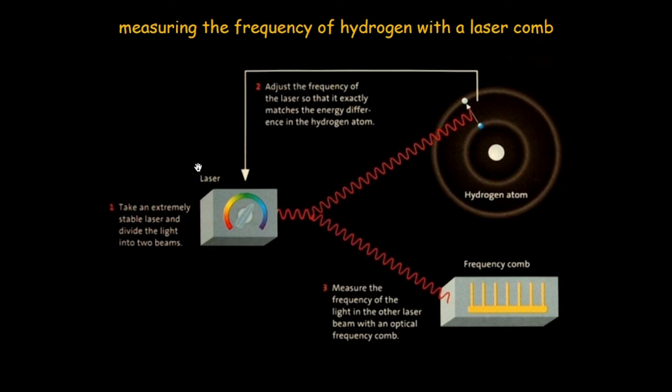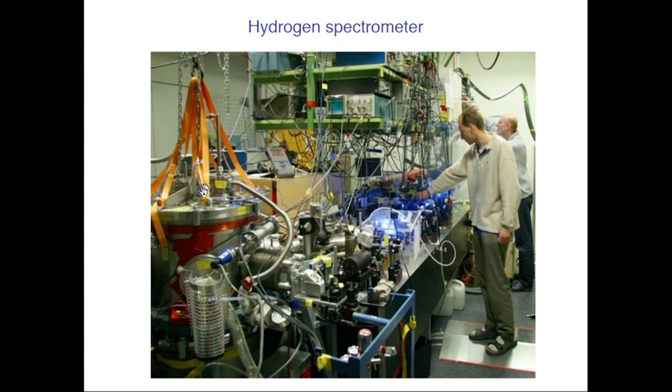How do you use a frequency comb to measure the frequency of hydrogen? At the time of the Nobel Prize in 2005, there was a poster printed that illustrates it. You have a laser, a tunable laser. You send some of this light to the hydrogen atoms to see if they get excited. If so, you send another part to the frequency comb. You look at a radio frequency beat note between this laser frequency and the nearest comb line. That tells you precisely where is the hydrogen resonance. In reality, it looks slightly more complicated. This is a view into the laboratory.